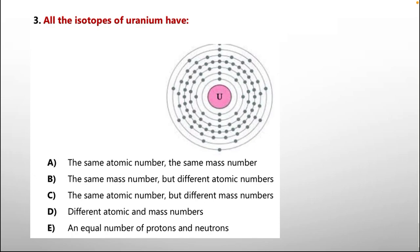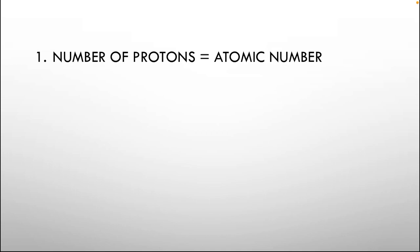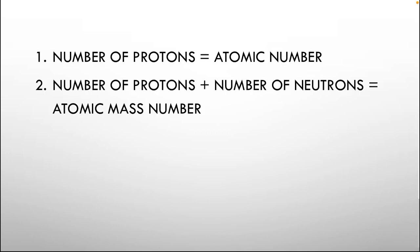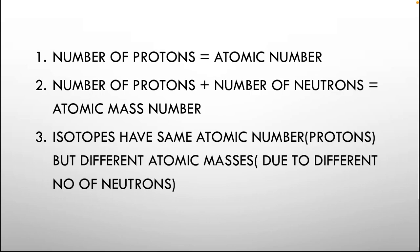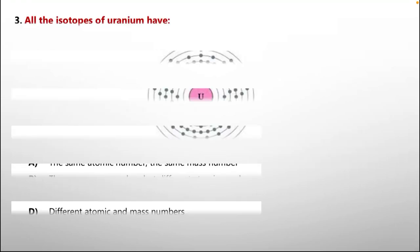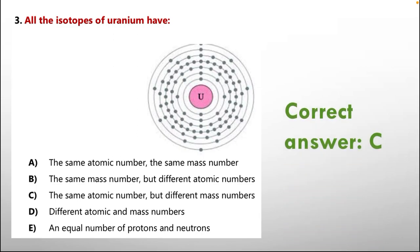Question 3: All the isotopes of uranium have — A: the same atomic number and mass number, B: the same mass number but different atomic numbers, C: the same atomic number but different mass numbers, D: different atomic and mass numbers, E: an equal number of protons and neutrons. The key facts are: atomic number equals number of protons; atomic mass equals protons plus neutrons; and isotopes have the same atomic number but different atomic masses due to different numbers of neutrons. So the correct option is C.